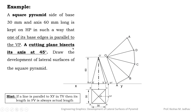However, a cutting plane bisects the axis at 45 degrees. After cutting the square pyramid, we need to draw the updated development. First we draw the development without cutting, then consider the cutting plane and update the development. Bisecting the axis means at the midpoint — at 30 mm — we mark a point and draw the cutting plane at 45 degree inclination. The upper part is removed and only the lower part is kept for the development.